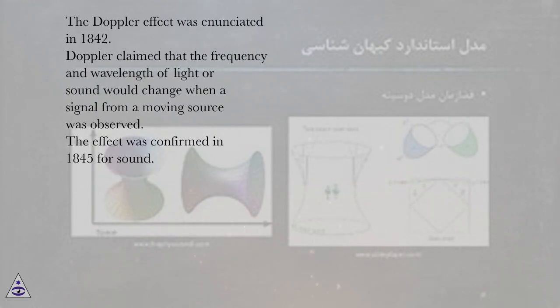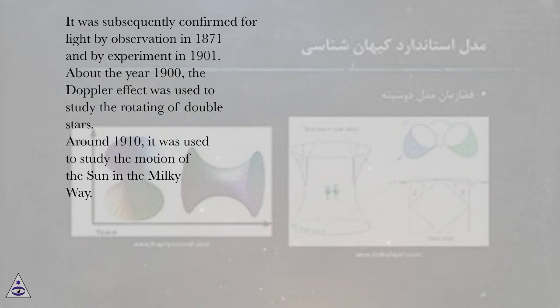The Doppler effect was enunciated in 1842. Doppler claimed that the frequency and wavelength of light or sound would change when a signal from a moving source was observed. The effect was confirmed in 1845 for sound. It was subsequently confirmed for light by observation in 1871 and by experiment in 1901.